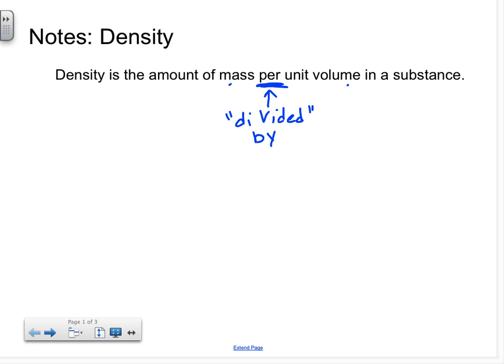So if density is the amount of mass per unit volume, and per means divided by, then that means that density equals mass divided by volume. Or D equals M over V.